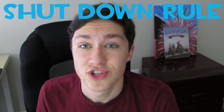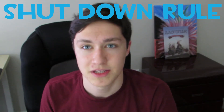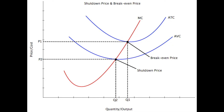Some micro-specific advice I would give is to especially know the shutdown rule, as well as all the points beforehand. For example: a firm is profitable when price is greater than the average total cost. A firm is neutral when price is equal to the average total cost. A firm will exit in the long run when the price is between average variable cost and average total cost. And the shutdown point is when the price becomes lower than the average variable cost. That's super important to know.